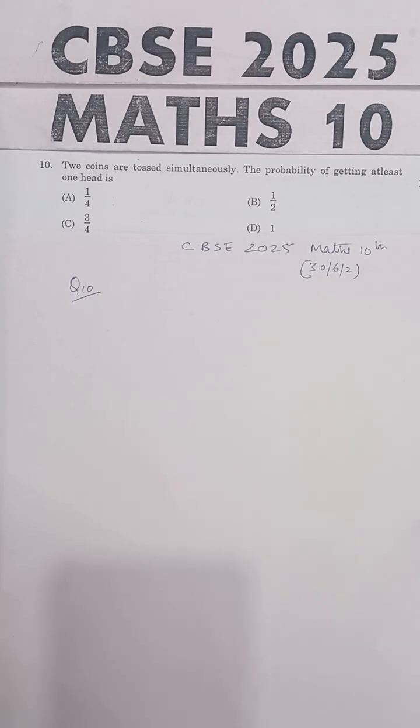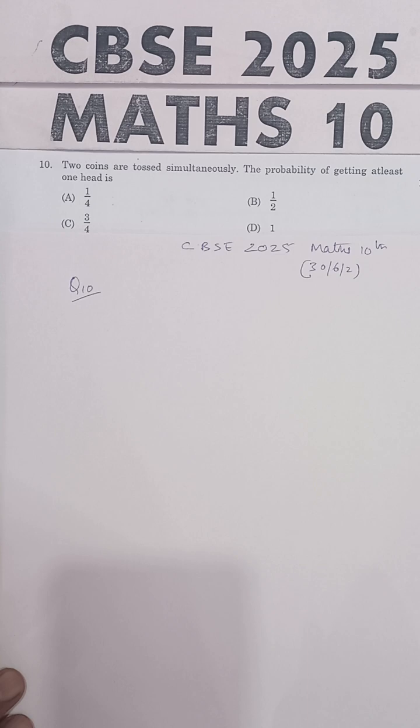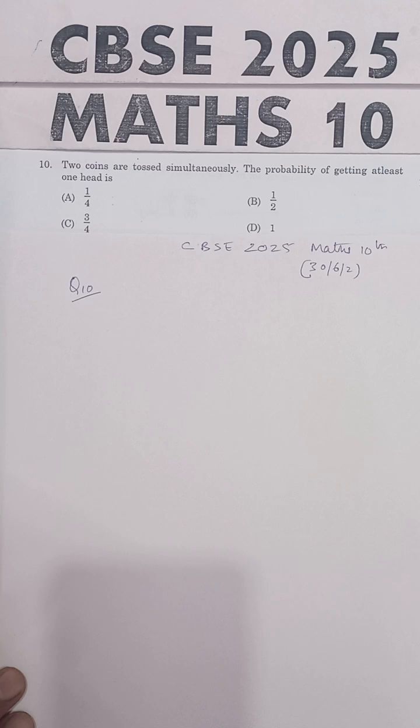This question is from CBSE Maths 10th, 2025 Board Examination. Statement of the problem is: Two coins are tossed simultaneously. The probability of getting at least one head.